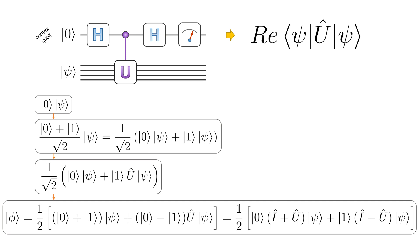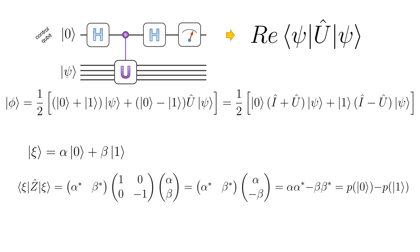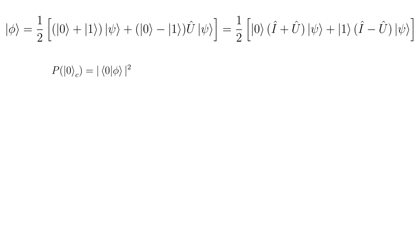But that's only half of the job. For the Hadamard test, we are interested in the expectation value of the measurement result. We read out only one qubit and the observable is operator Z. It can be shown that the expectation value of operator Z is the probability to measure the control qubit in state 0 minus the probability to measure it in state 1.